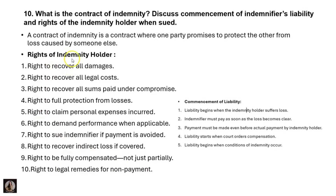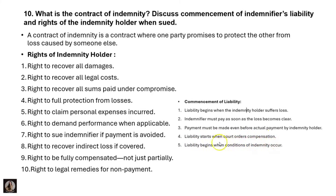Additional rights of the indemnity holder: right to damage performance when applicable, right to sue the indemnifier if payment is avoided, right to cover indirect losses, right to be fully compensated — not just partially — and right to legal remedies for non-payment. Regarding commencement of liability: liability begins when the indemnity holder suffers a loss; the indemnifier must pay as soon as the loss becomes clear, even before actual payment by the indemnity holder; and liability starts when the court orders compensation.